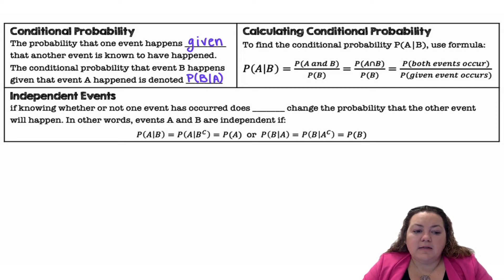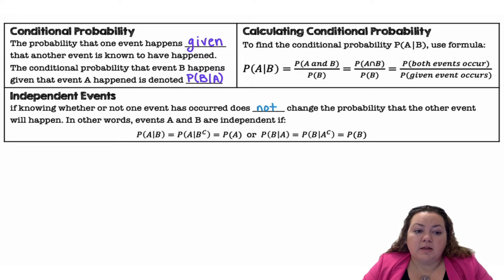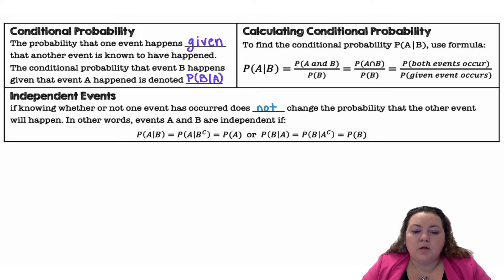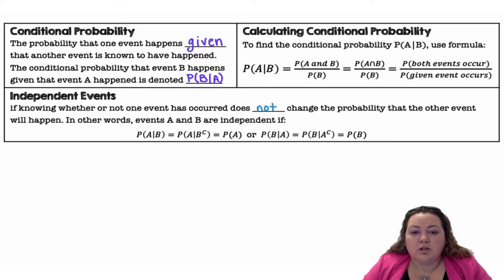For independence: if knowing whether or not one event has occurred does not change the probability that the other event will happen, then those events are independent. Events A and B are independent if the probability of A given B equals the probability of A given not B, which also equals the probability of A. Or the probability of B given A equals the probability of B given not A, which also equals the probability of B. They have to be equal.